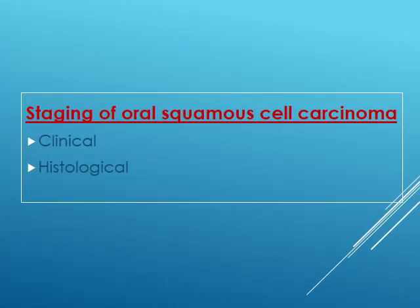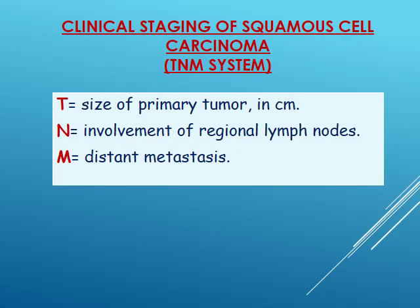Classification or staging of oral squamous cell carcinoma includes clinical staging and histopathological staging. Clinical staging uses the TNM system: T refers to the size of the tumor, N refers to involvement of regional lymph nodes, and M refers to distant metastasis. Each letter is assigned numbers denoting specific meanings, which are available in your notes.